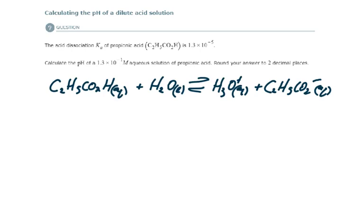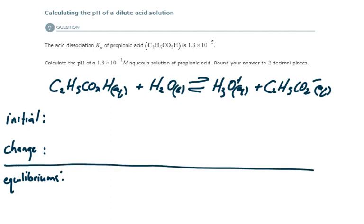Our next step is we can create our ICE table here with our initial change and equilibrium concentrations of the major species in this reaction. So the initial concentration of propionic acid is given. It's 1.3 times 10 to the minus 1.